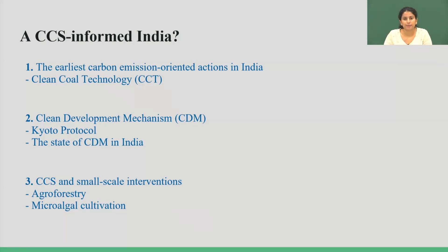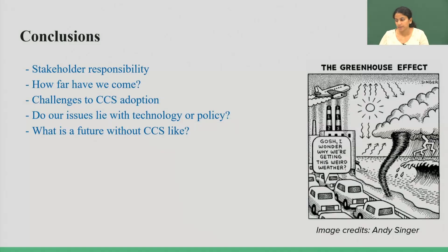Finally, flue gas from coal-powered plants can be transferred into algal ponds where microalgae work on the carbon and act as artificial sinks for carbon sequestration. To conclude, we have understood that there are multiple stakeholders involved — nearly everyone is a stakeholder. Historically, at least in India, we have come from clean coal technology to CDM. There have been challenges to CCS adoption; for example, because renewable forms of energy are limited in use, we are approaching the climate change conversation through CCS.